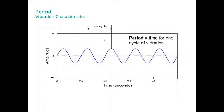One of the characteristics of vibration is the period. The period is the time for one cycle. In this case, we have one second. In one second, there are five full cycles. The period is one second divided by five cycles, or 0.2 seconds per cycle.